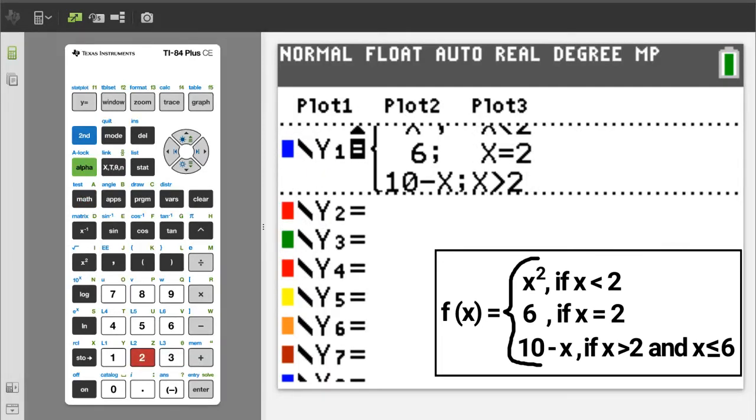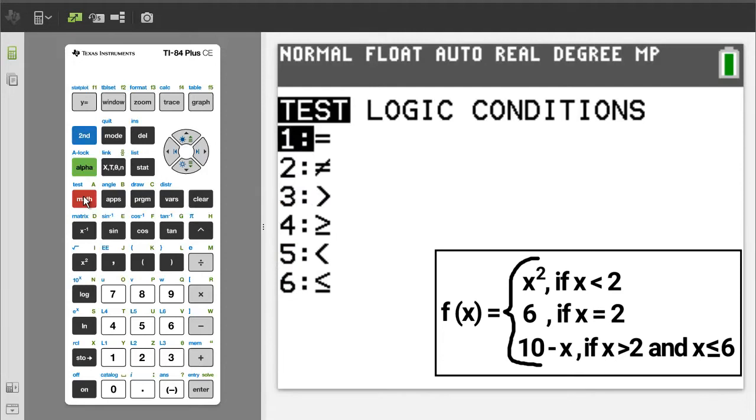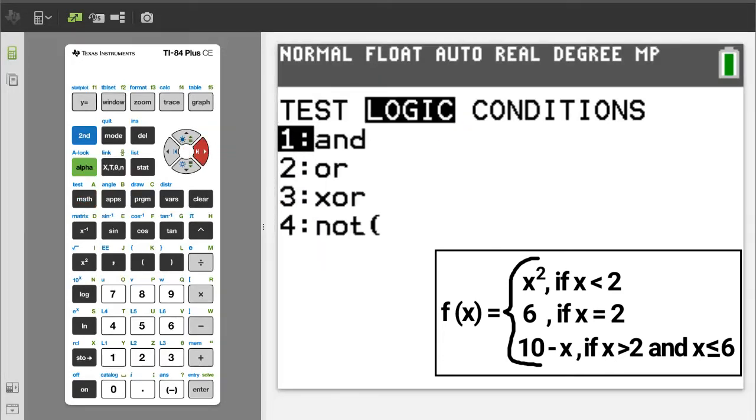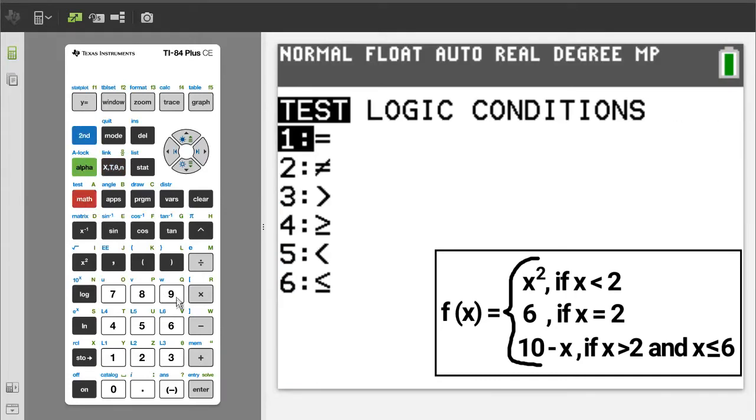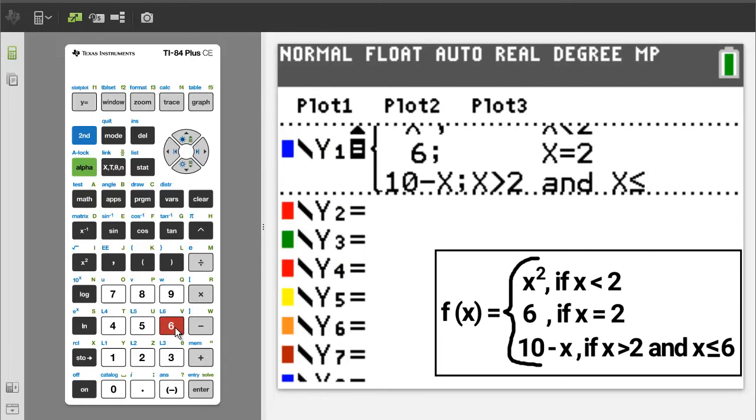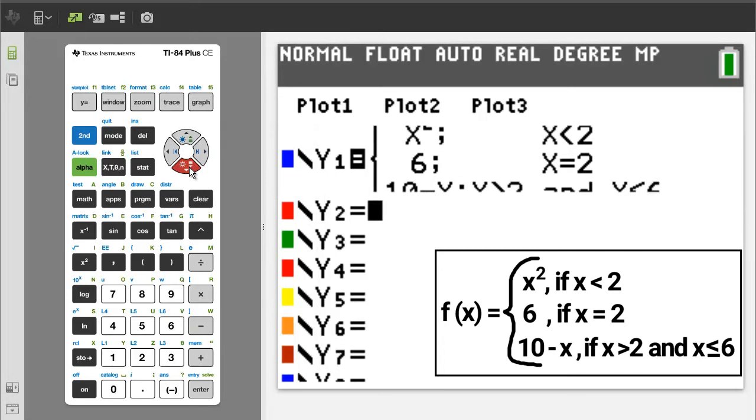Here we will enter x is greater than 2, and x is less than or equal to 6. To get the and, press the second button, then the math button. Right arrow to logic. And is number 1, so press the 1 button. Now enter x is less than or equal to 6. Press the down arrow button. Now press the graph button to graph it.